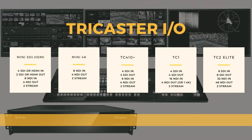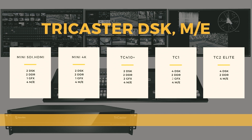Jumping to the TC2 Elite, things double again — like Moore's Law. It has eight physical SDI ins and eight out, with a total of 32 channels available. On the next slide we see DSKs, DDRs, and graphics — the input side doubles but outputs, graphics, and other features remain consistent at the top of the line.